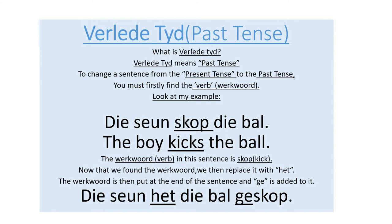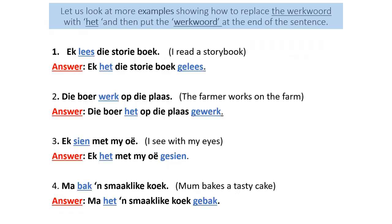Now let's look at my example. The verb word or the verb in this sentence is 'skop', or 'kick'. Now that we've found the verb word, we then replace it with 'het'. The verb word is then put at the end of the sentence and 'het' is added to it. Let us look at more examples to show how to replace the verb word with 'het' and then put the verb word at the end of the sentence.